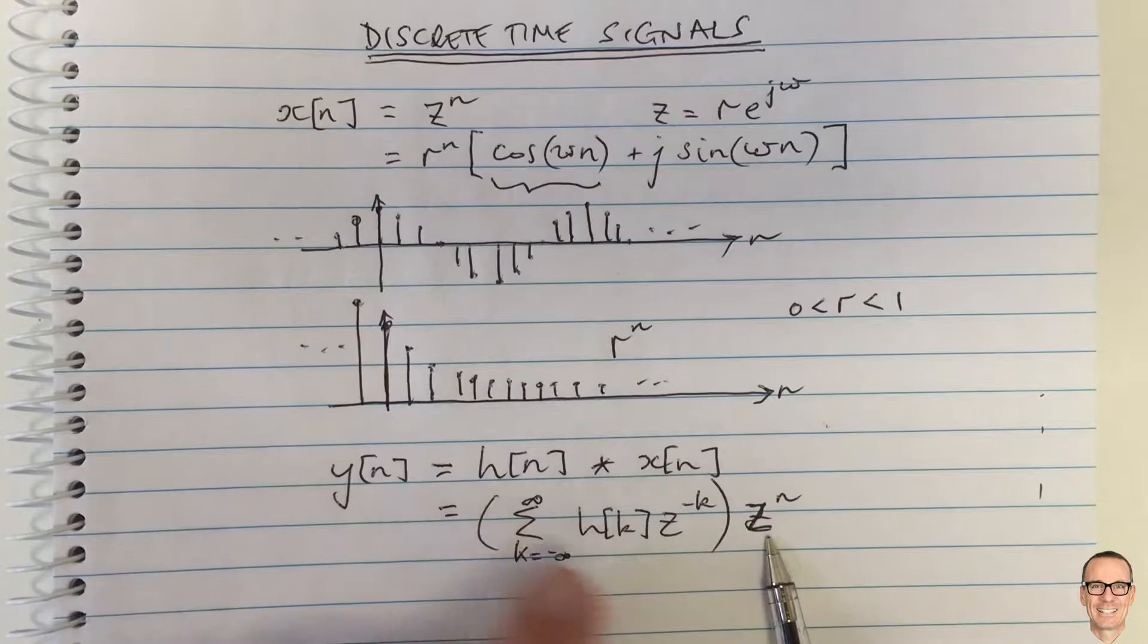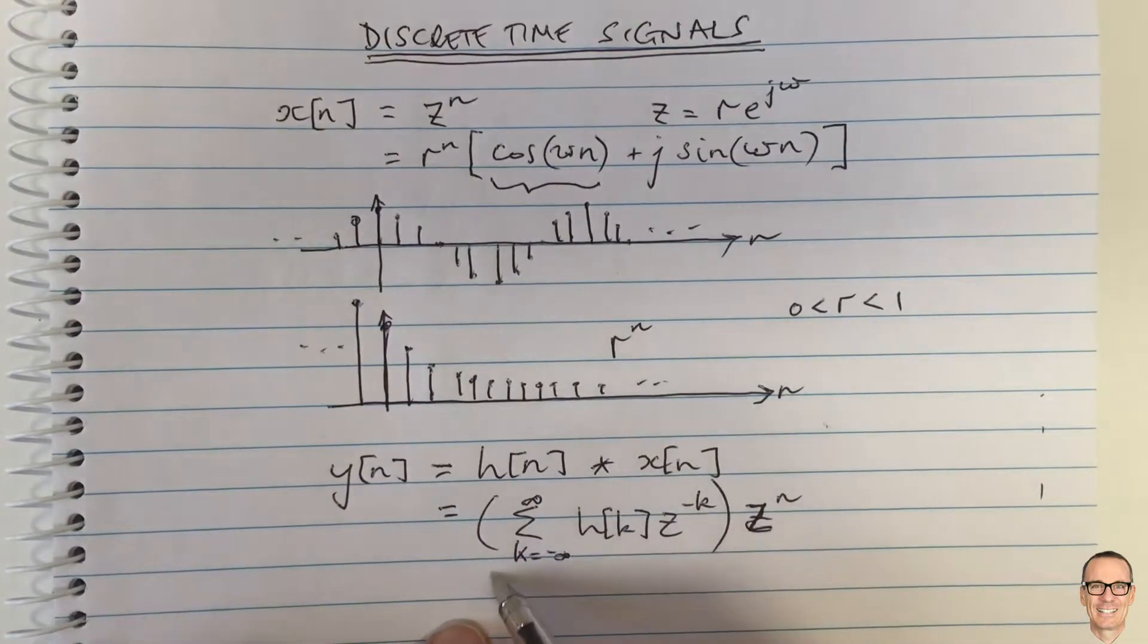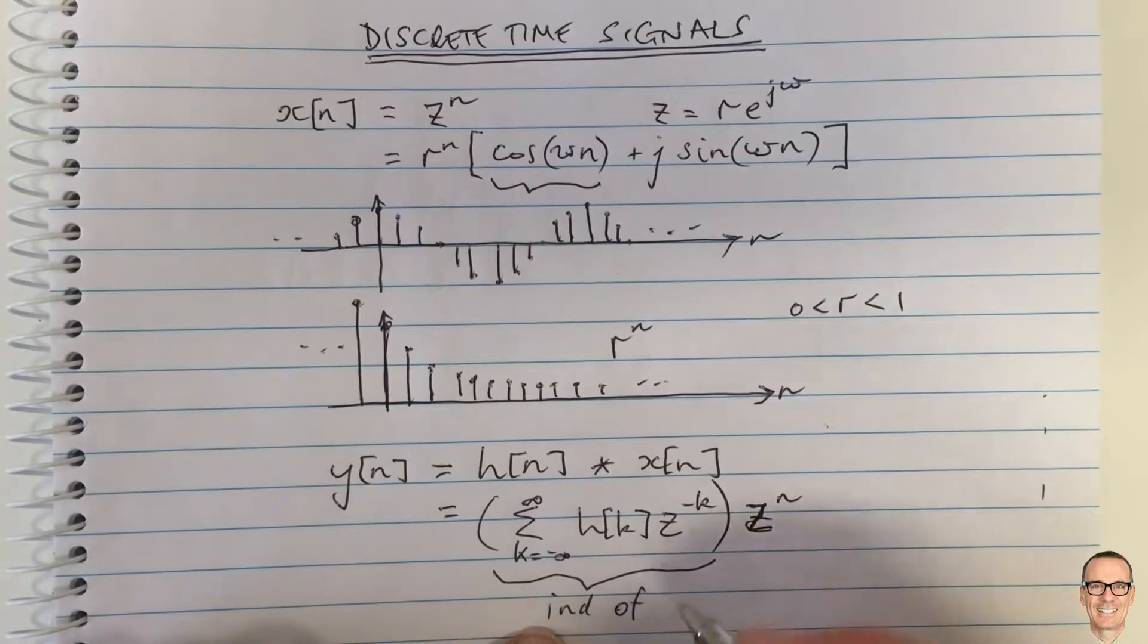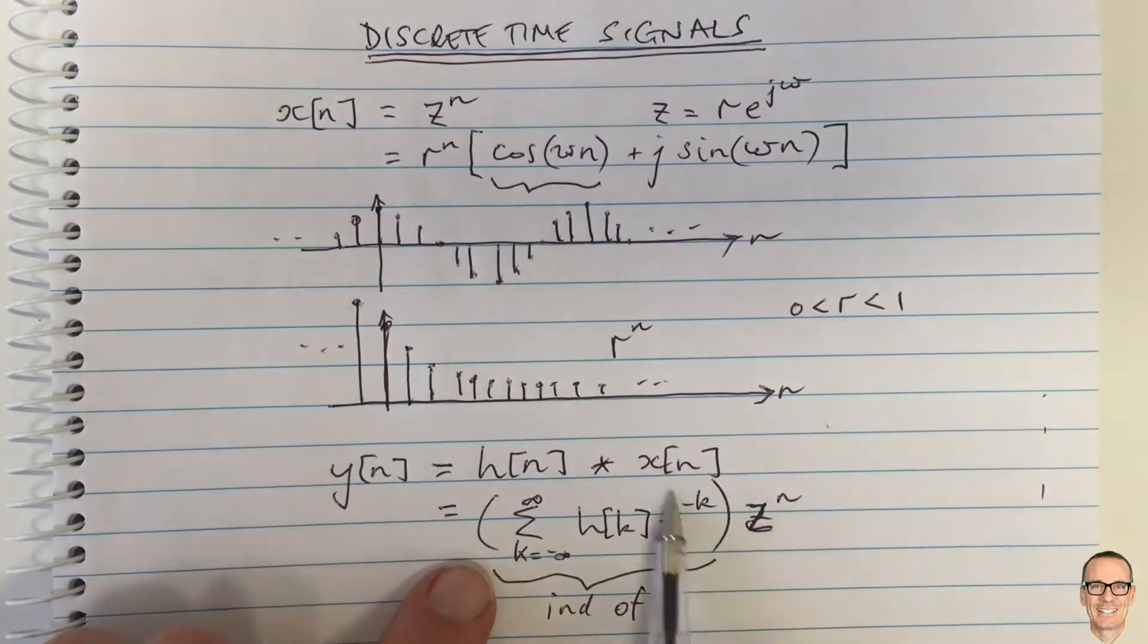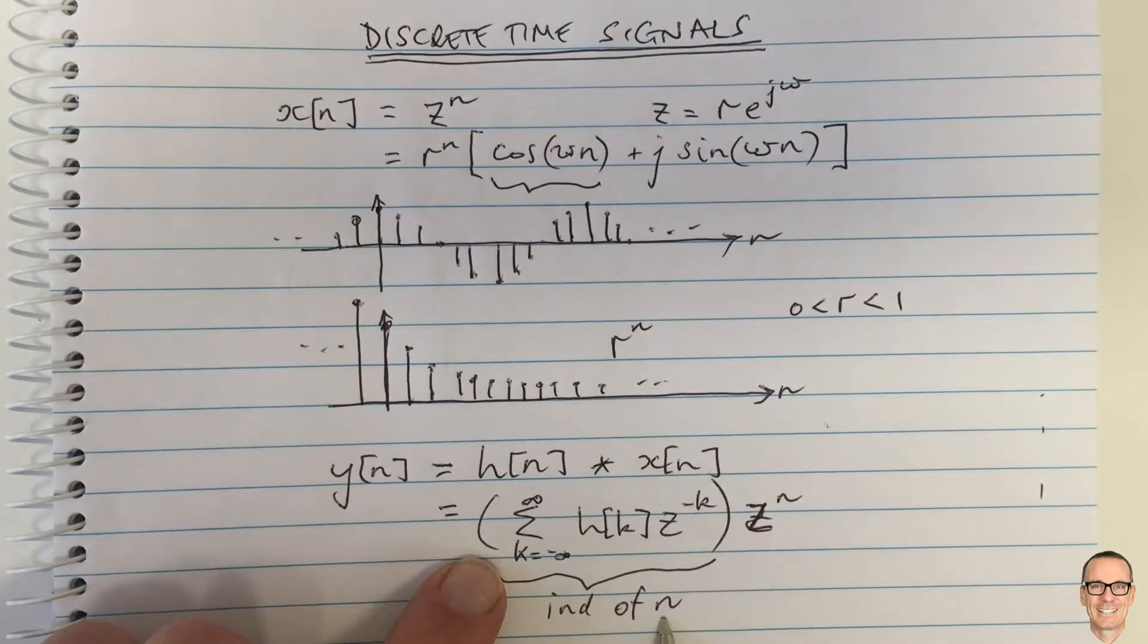times z^n. So we put z^n into the linear system, and z^n comes out multiplied by a term independent of n. This term in the brackets does not depend on n, so this waveform goes in and comes out multiplied by a factor which does not depend on n.